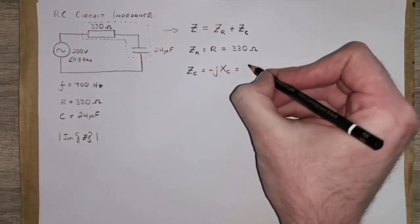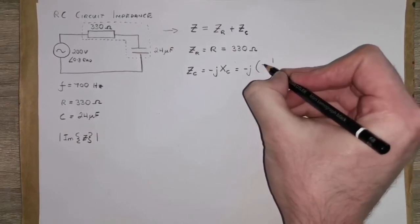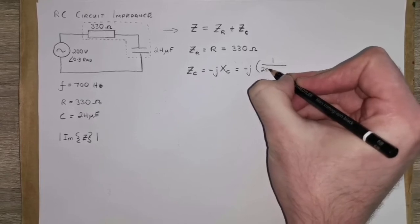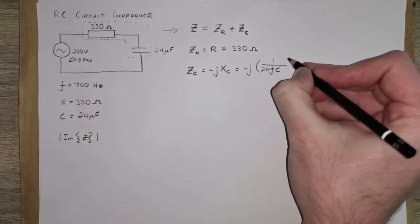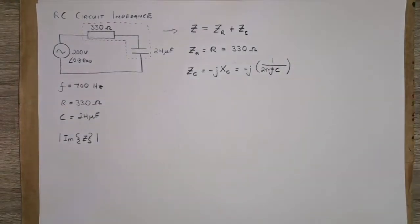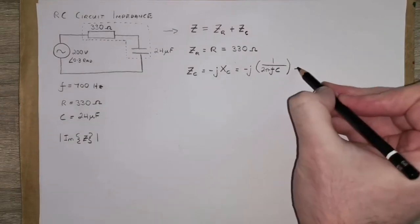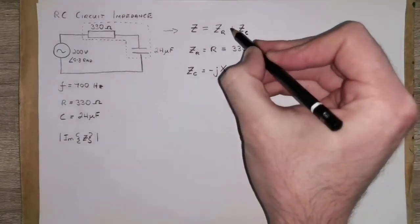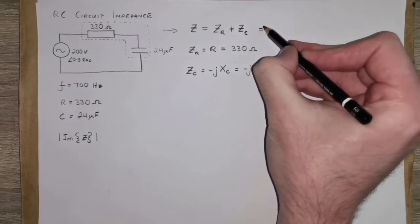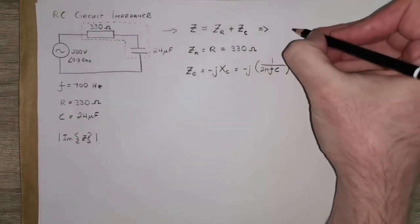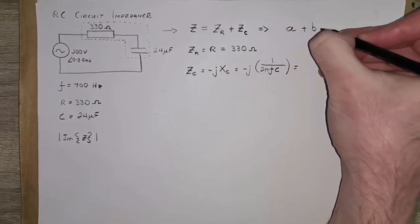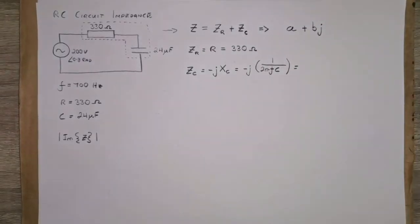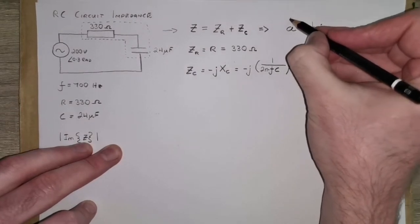And we can calculate Xc as 1 over 2 times pi times the frequency, which we have, we're giving that in our question here, multiplied by the capacitance. Now, when we have these two values, we can pass them back into our equation for our total impedance. And what you're going to end up seeing is that you're going to end up with an imaginary number for the total impedance in the form A plus B times J.